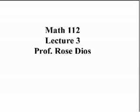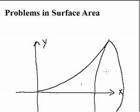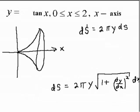Hello and welcome back to Calculus 2. Today we have our third lecture, which is examples of areas of surfaces of revolution. Recall that when we have an area of surface of revolution, we're looking at the area of the outer hollow shell that's generated as we revolve about a particular axis. Let's take a look at a specific example.